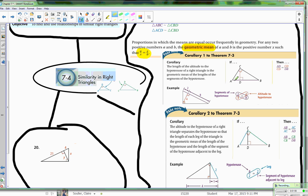...over CD is proportional to CD over DB. So the altitude of the hypotenuse goes in where the X is on our geometric mean.